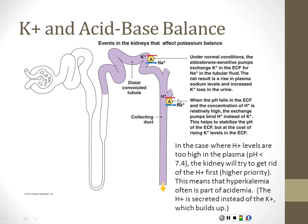In the case of a patient who is acidotic — whose pH is lower than normal — these pumps in the nephron are going to pump out hydrogen ions instead of potassium ions. That seems like a good idea, but it creates a connection between high potassium levels and acidosis.